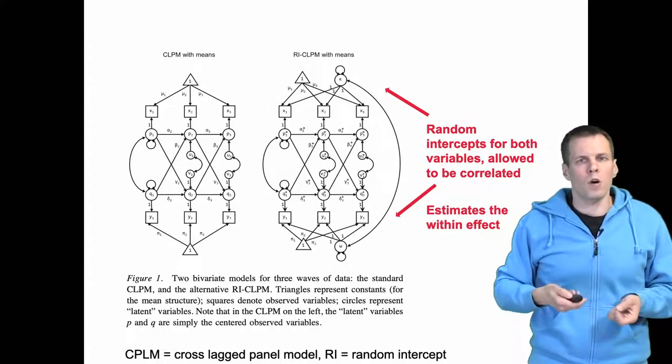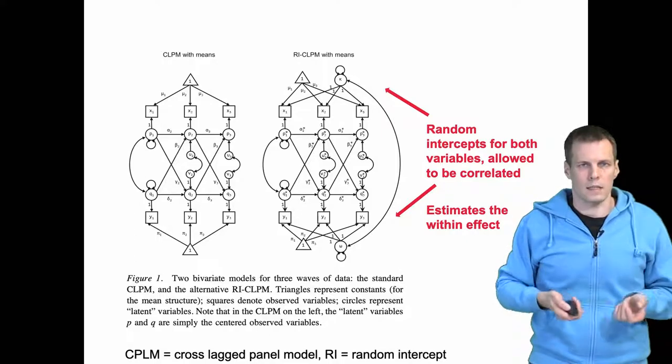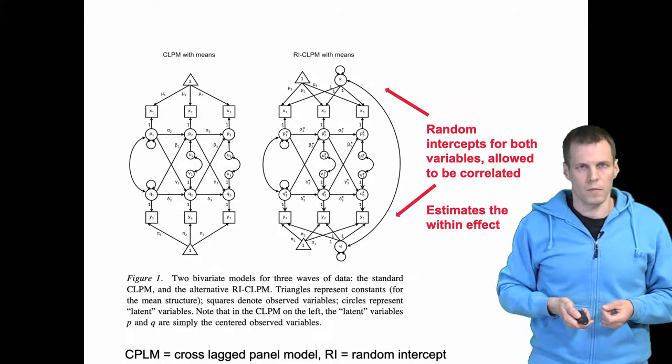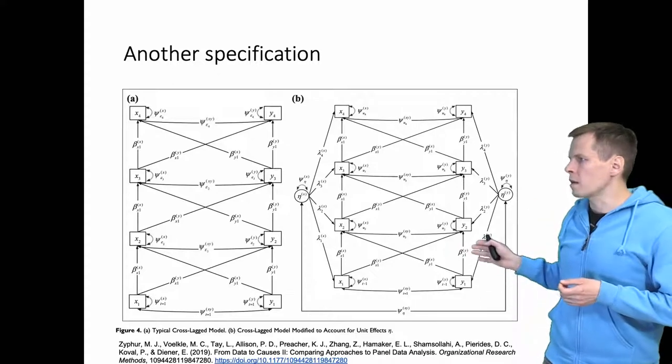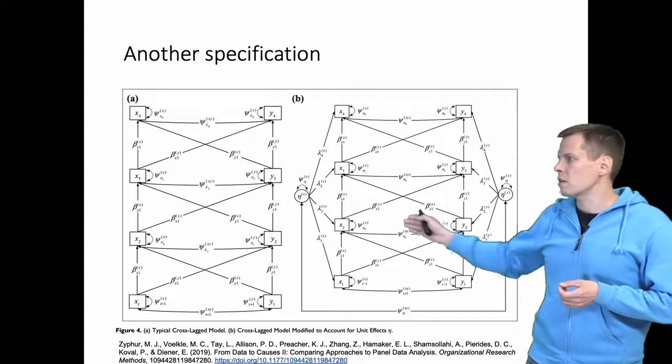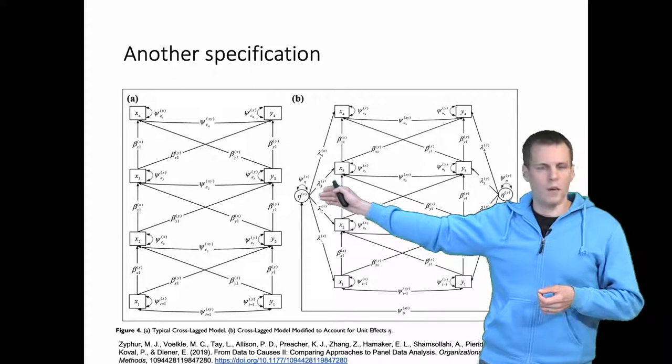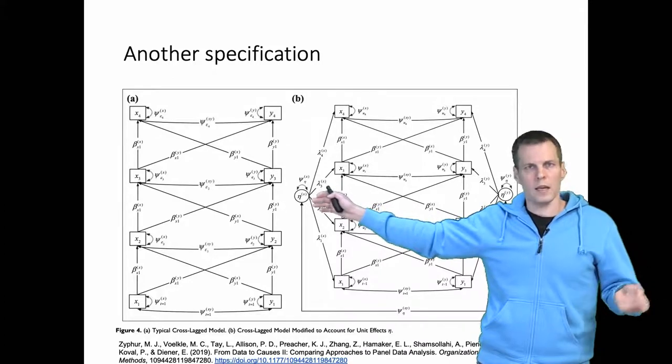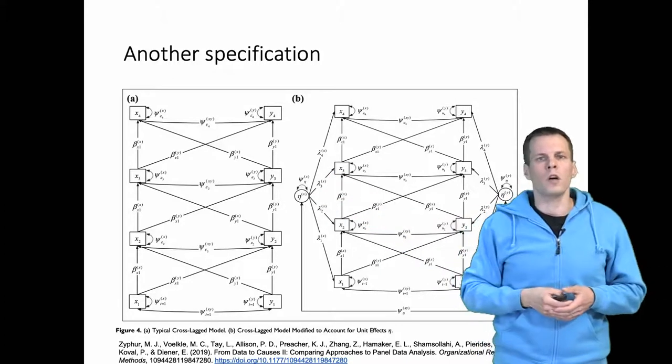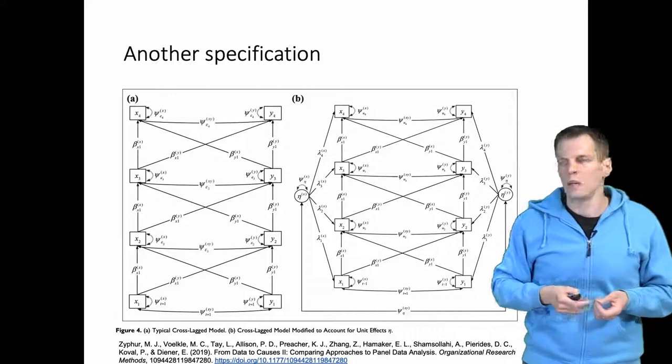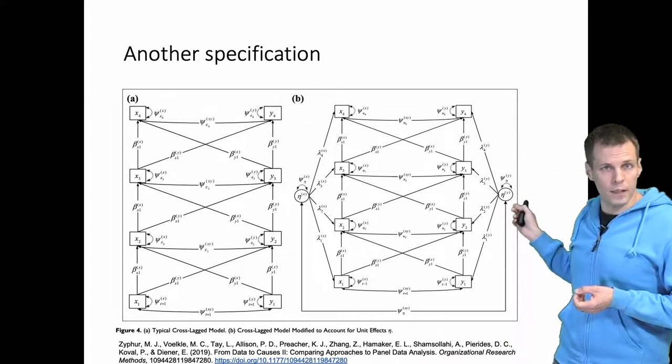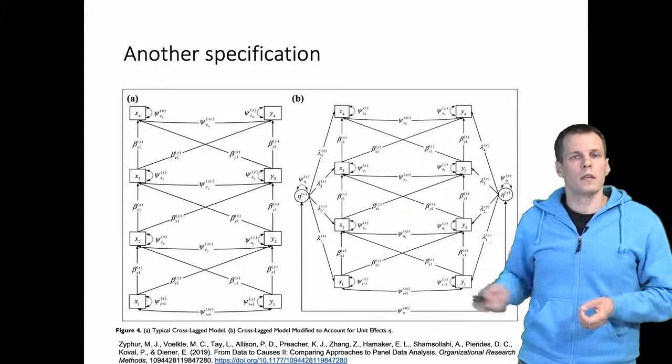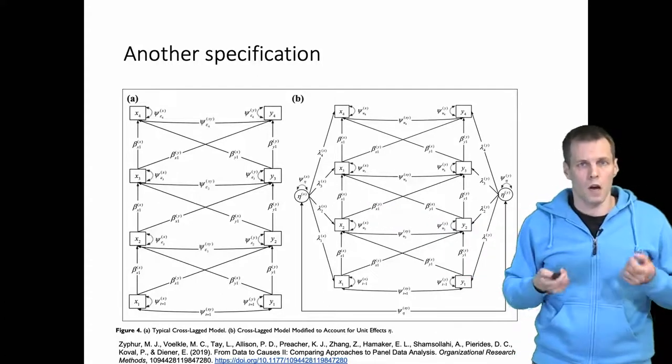There is also another model that does the same—that estimates the within effect. This is a variant of the same model presented by Zyphur and co-authors. This is the normal cross-lagged model: we have X causes Y, Y causes X, and those go over time with persistence over time. We have these latent random intercepts affecting X and affecting Y. This is a simpler specification than Hamaker's specification.